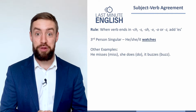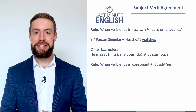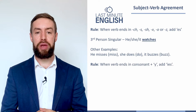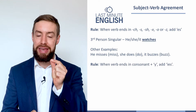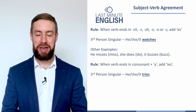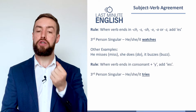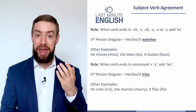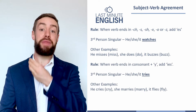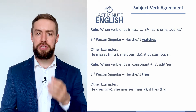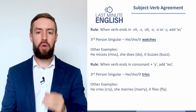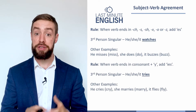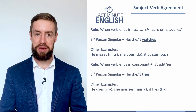Another rule to remember: when the verb ends in Y, we add IES. For example, 'try' becomes 'tries.' Some other examples: cries, marries, and flies. All of those end in Y, so we change it to IES when it's in the third person singular.